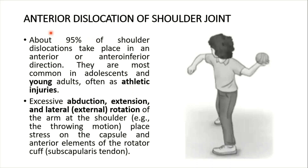Continuing with anterior dislocation of the shoulder joint — about 90% of dislocations take place in an anterior or antero-inferior direction. They are most common in adolescents and young adults, often as athletic injuries. Excessive abduction combined with extension and lateral rotation — the combination of these movements of the arm at the shoulder, for example a throwing motion — places stress on the capsule and anterior elements of the rotator cuff, which is the subscapular tendon.